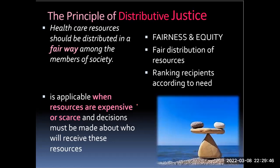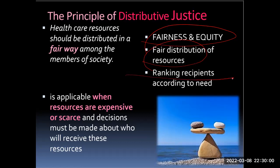The principle of distributive justice holds that healthcare resources should be distributed in a fair way among society, with fairness, equity, and a fair distribution of resources ranked according to need. This principle is applicable when resources are expensive or scarce and decisions must be made about who will receive them. Distributive justice is concerned with a fair allocation of resources among diverse members of a community, taking into account the total amount of goods to be distributed, the distributing procedure, and the pattern of distribution that results.